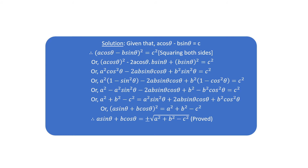Using (a minus b)² equals a² minus 2ab plus b²: a² cos² θ minus 2ab sin θ cos θ plus b² sin² θ equals c². Substituting cos² θ equals 1 minus sin² θ: a² times 1 minus sin² θ minus 2ab sin θ cos θ plus b² sin² θ equals c². Expanding: a² minus a² sin² θ minus 2ab sin θ cos θ plus b² minus b² cos² θ equals c².